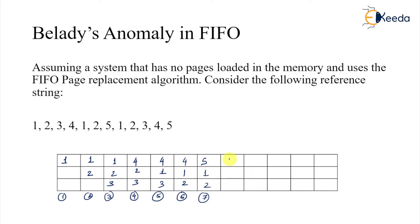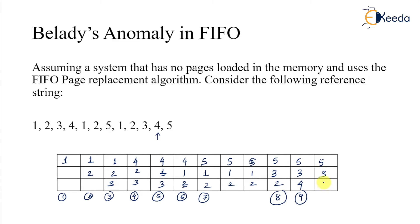Then 5 comes, giving 5, 1, 2 — page fault seven. Then 1 and 2 come — both are hits, so no change: 5, 1, 2 remains. Then 3 comes — 5 was the first to arrive, so 5 is replaced. Tracking the aging order: 3 replaced 2, 2 replaced 1, and 5 was first to come. So 3 comes in giving 3, 1, 2 — page fault eight. Then 4 comes, replacing 3 — wait, 5 is gone; we get 3, 4, 2 area — page fault nine.